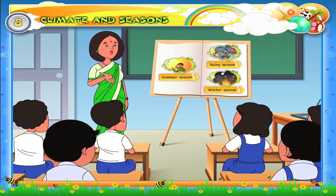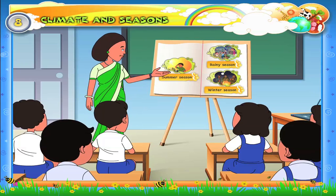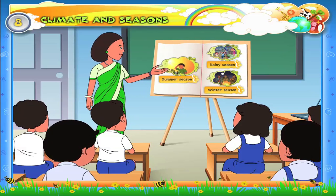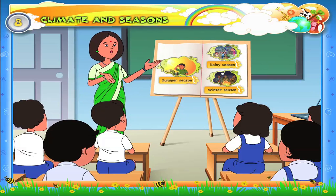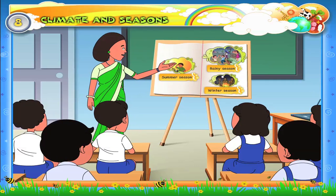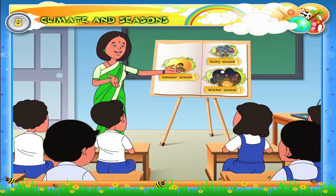Children, today we will learn about seasons. There are three main seasons in a year: Summer, that is the hot season, rainy season, and winter, that is the cold season.